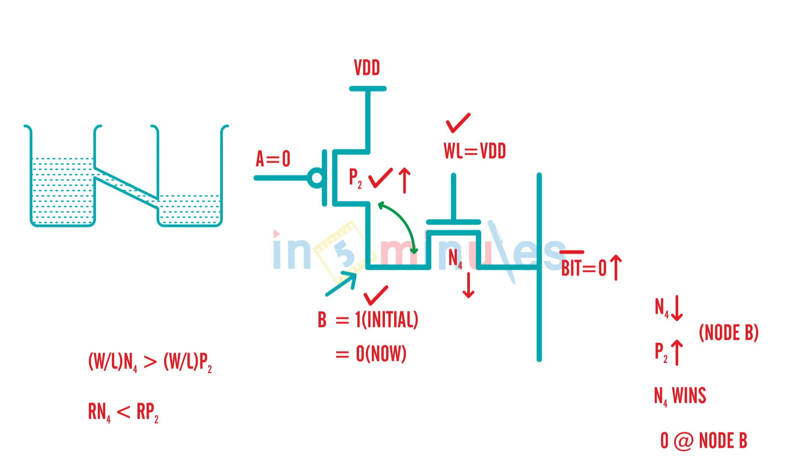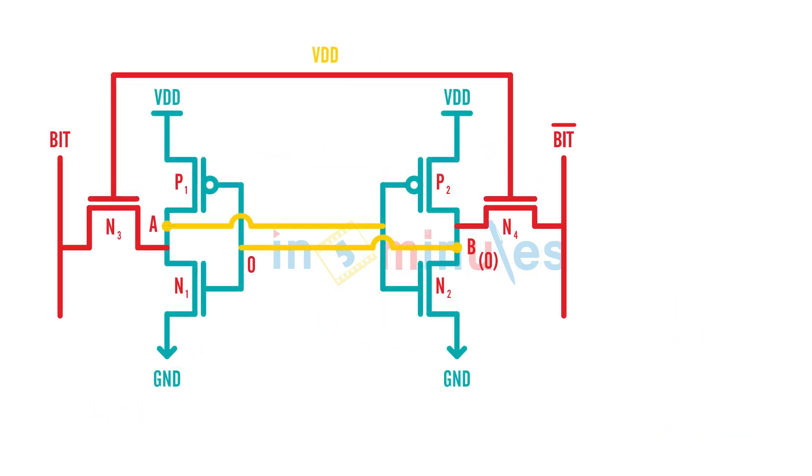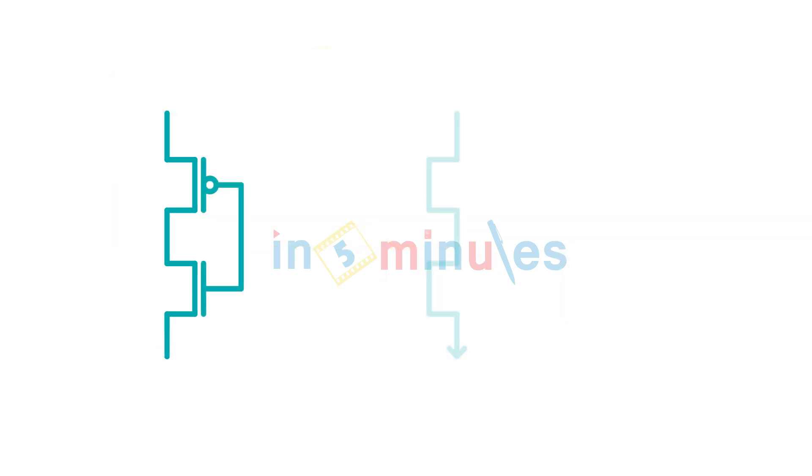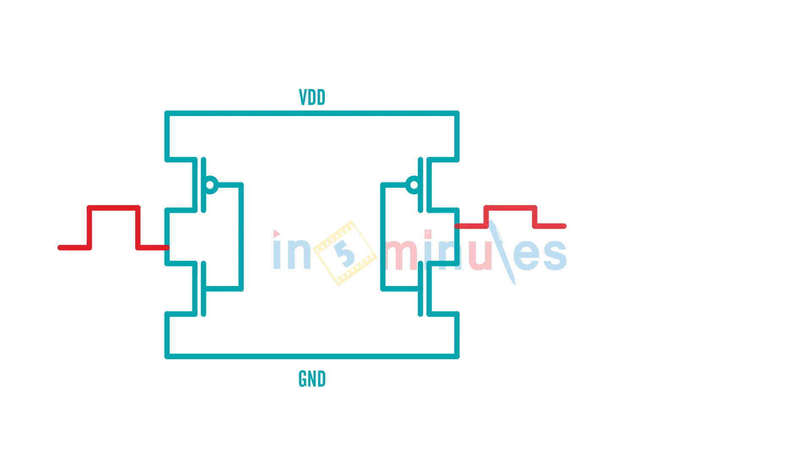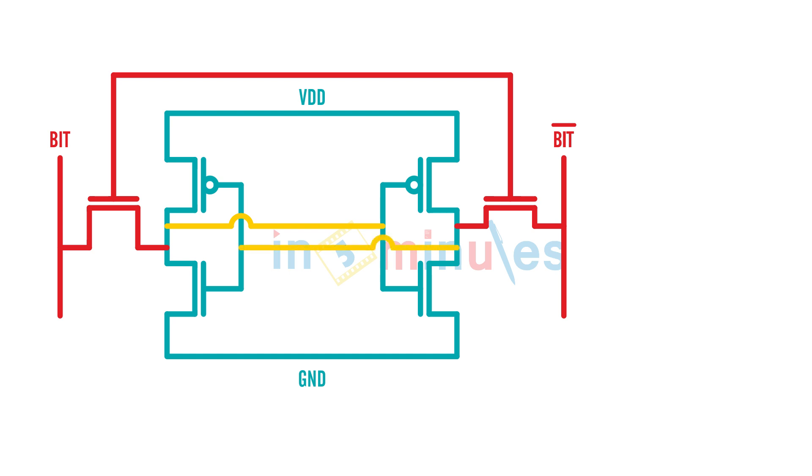For that we need to go back to our original diagram. You remember this right? It's just a plain diagram. Back again, real quick we will do it. My bit, my bit bar - let's make it cross-coupled real quick. And this node was A, this node was B.